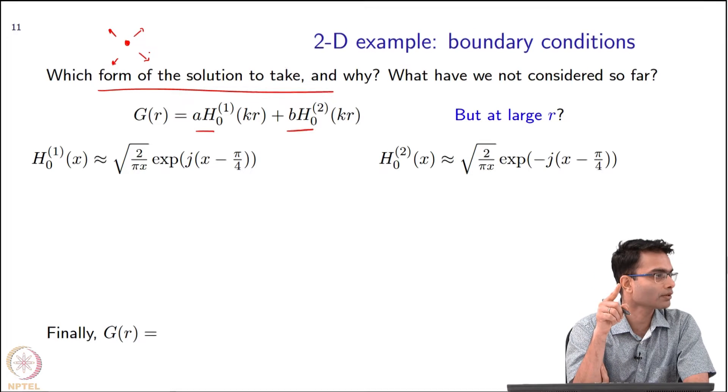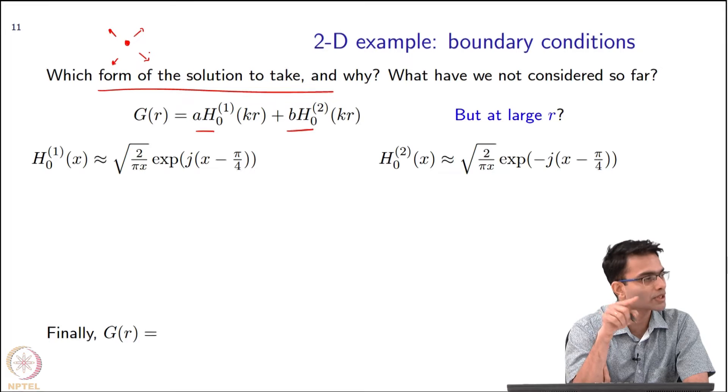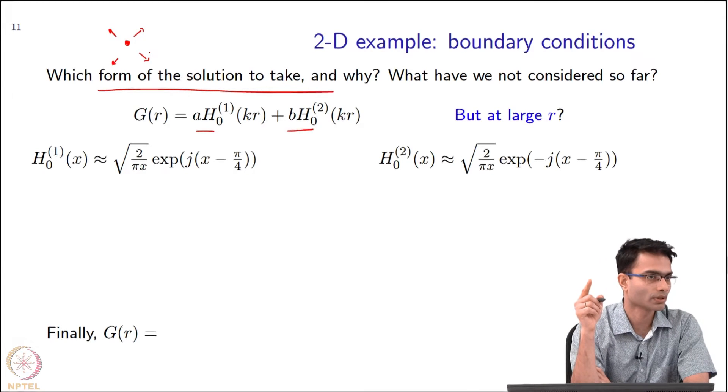That time derivative gave me a minus omega square, I mean a jω and a second time derivative minus omega square. But my time convention was e^(+jωt).